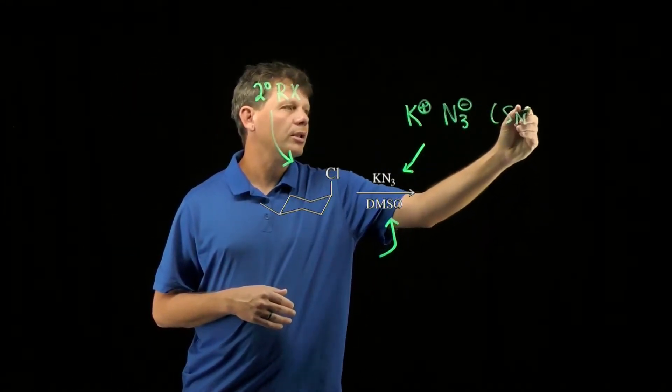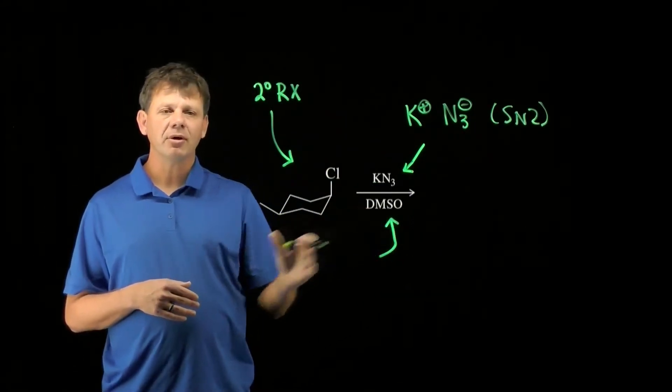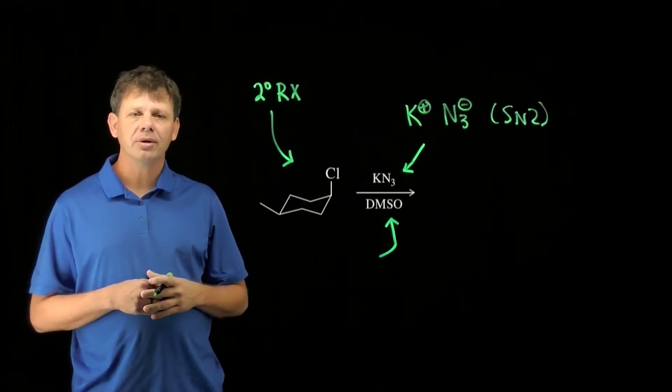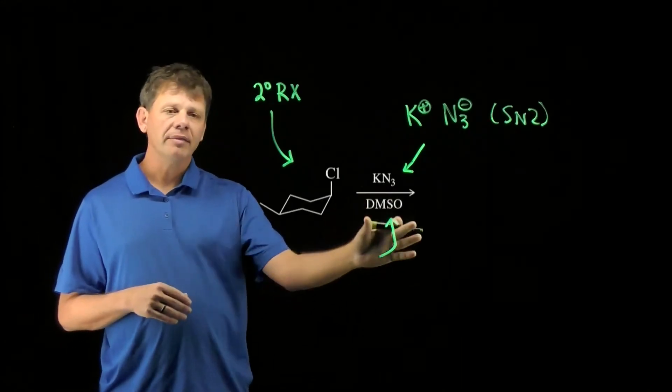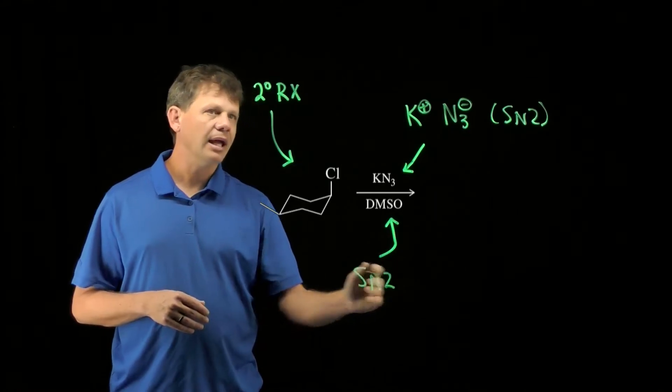So the nucleophile suggests SN2. Our solvent here is DMSO, which is a polar aprotic solvent. As a polar aprotic solvent, it's going to make nucleophiles stronger. Therefore, the polar aprotic solvent will also favor the SN2.